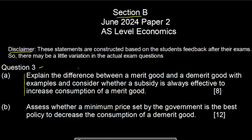Question number 3 was similar to this statement: explain the difference between a merit and a demerit good with examples, and you have to explain and differentiate them not only based on definitions but also give an example of each. The second part asks: consider whether a subsidy is always effective to increase consumption of a merit good, and assess whether a minimum price set by the government is the best policy to decrease the consumption of a demerit good.